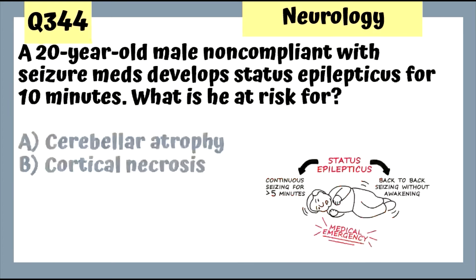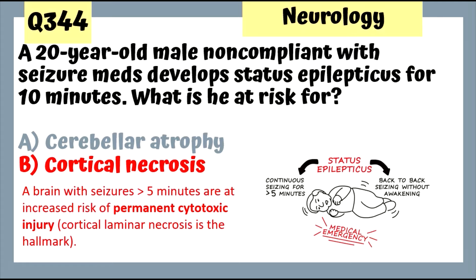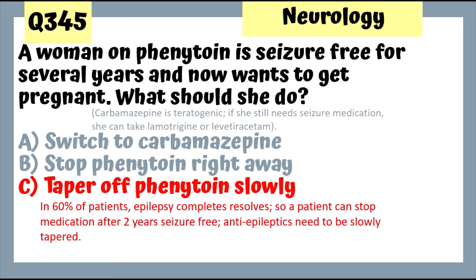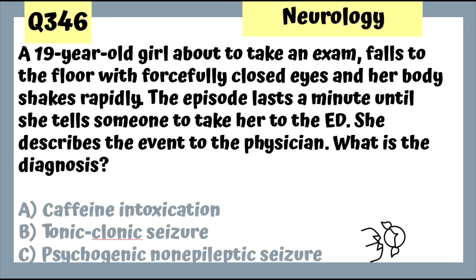Question 344: A 20-year-old non-compliant with seizure medication seizes for 10 minutes — at risk for cortical necrosis from prolonged seizure. Question 345: A woman on phenytoin who has been seizure-free for several years wants to get pregnant — she can taper off phenytoin slowly. Two years is the threshold of seizure-free time before reducing anticonvulsant medications, which should be tapered slowly.